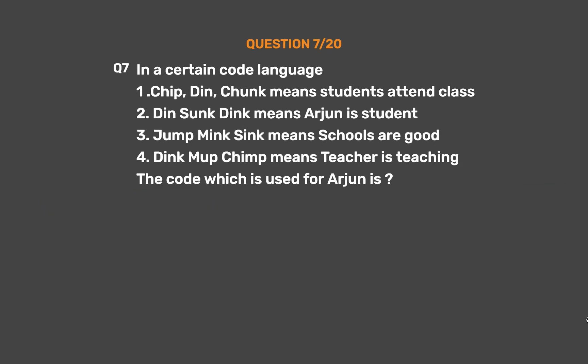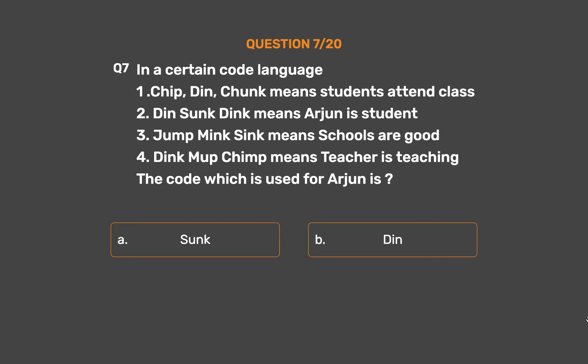Question number 7: In a certain code language: (1) CHIP DIN CHUNK means 'students attend class'; (2) DIN SUNK DINK means 'Arjun is student'; (3) CHUNK MINK SINK means 'schools are good'; (4) DINK MOP CHIMP means 'teacher is teaching'. The code for 'Arjun' is: Option A: SUNK. Option B: DIN. Option C: DINK. Option D: CHUNK.